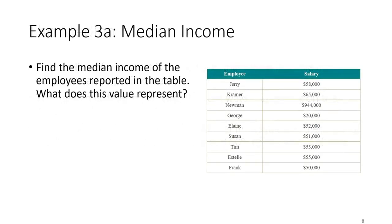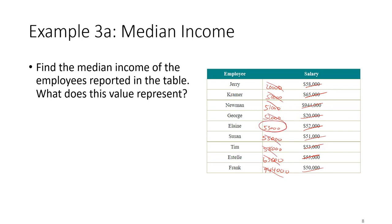Let's find the median income from the employees in the table. We reorder all of the incomes from smallest to largest — 20,000, 50,000, and so on up to 944,000. The median is the data value in the middle of this list. Crossing out values from top and bottom, our median is $53,000. That means half of the incomes are above and half are below that amount.